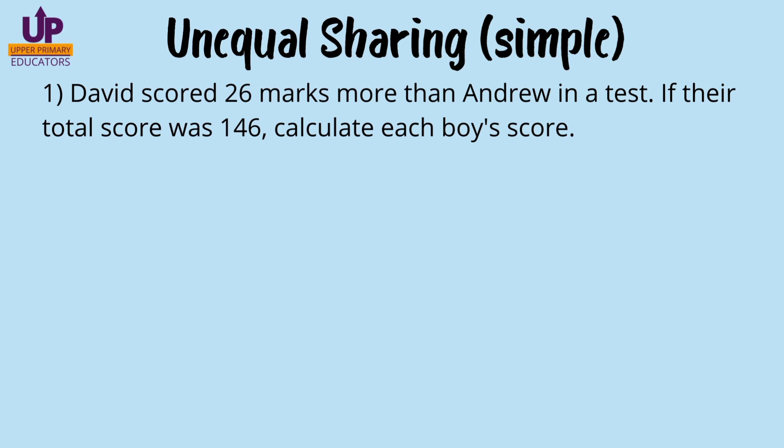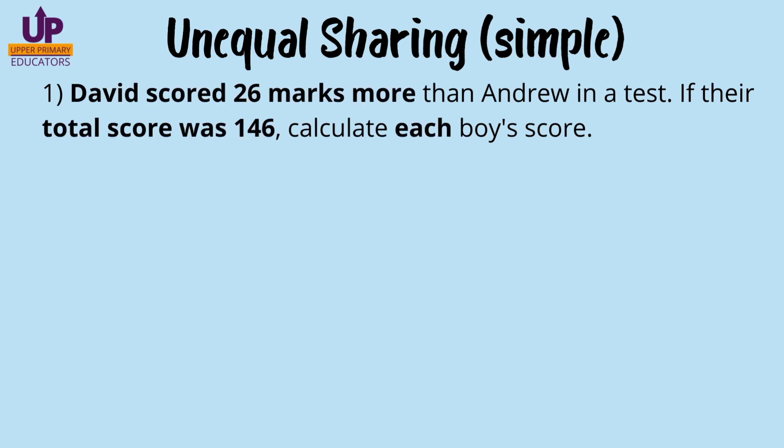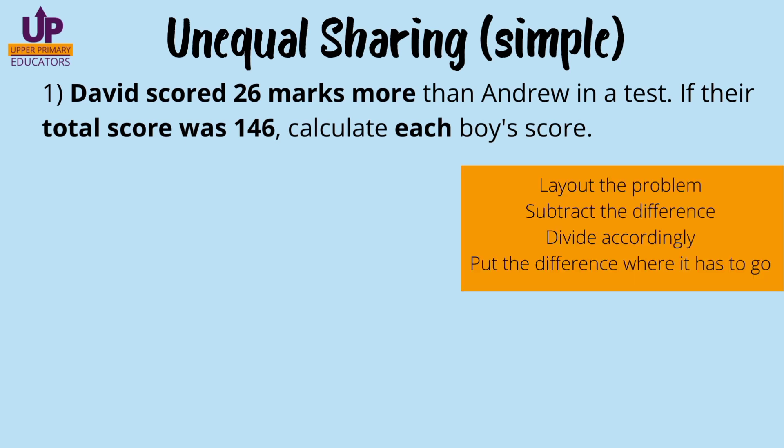We know that this topic is unequal sharing because one person has a greater number of marks than the other. So we underline — or in this case highlight — important words and details, and we look at our steps for unequal sharing: lay out the problem, subtract the difference, divide accordingly, and put the difference where it has to go. Step one: lay out the problem.